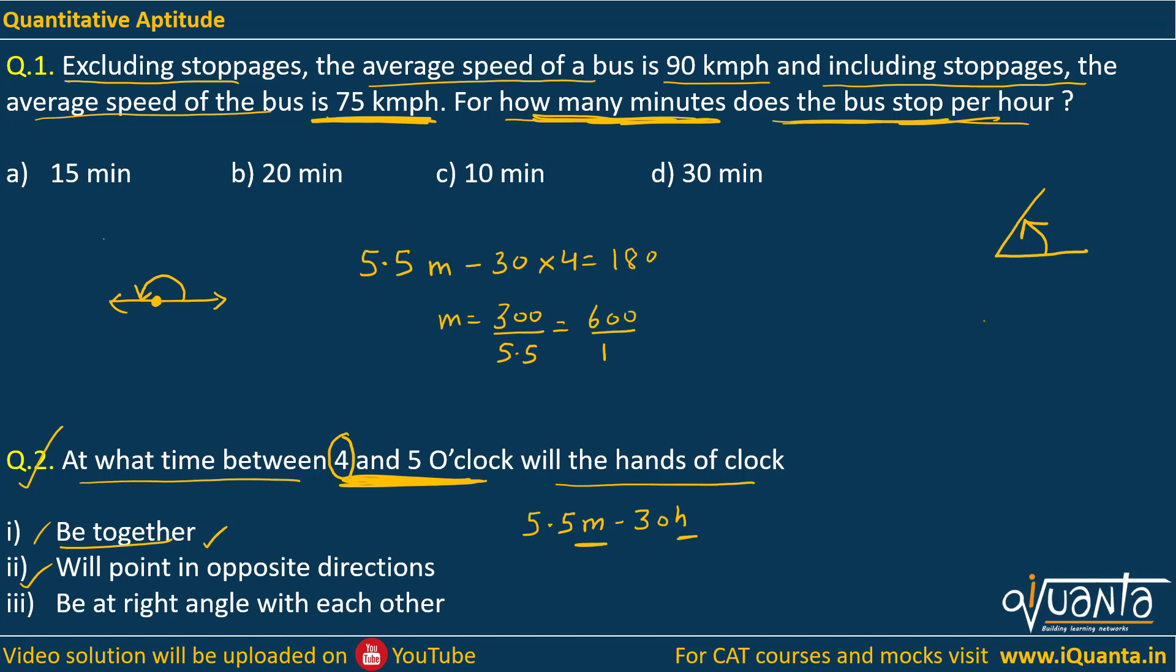which gives us 600 by 11 minutes. So 600 by 11 minutes after 4, they will point in opposite direction. Similarly, you have to solve the third one: be at right angle with each other. You will simply replace this 180 by 90 and then do the calculations. That would give you the answer. So I hope this is understood. If you have any doubt, please ask.